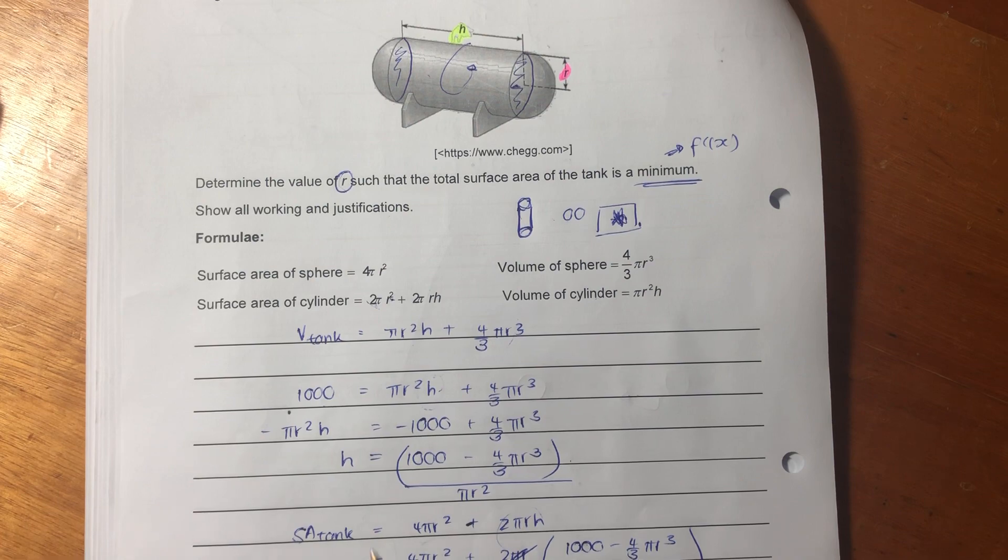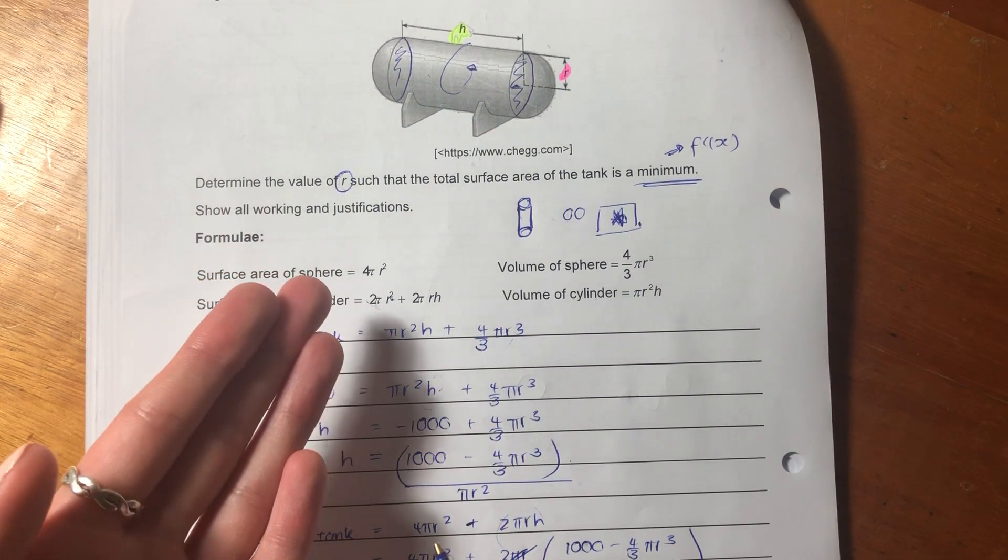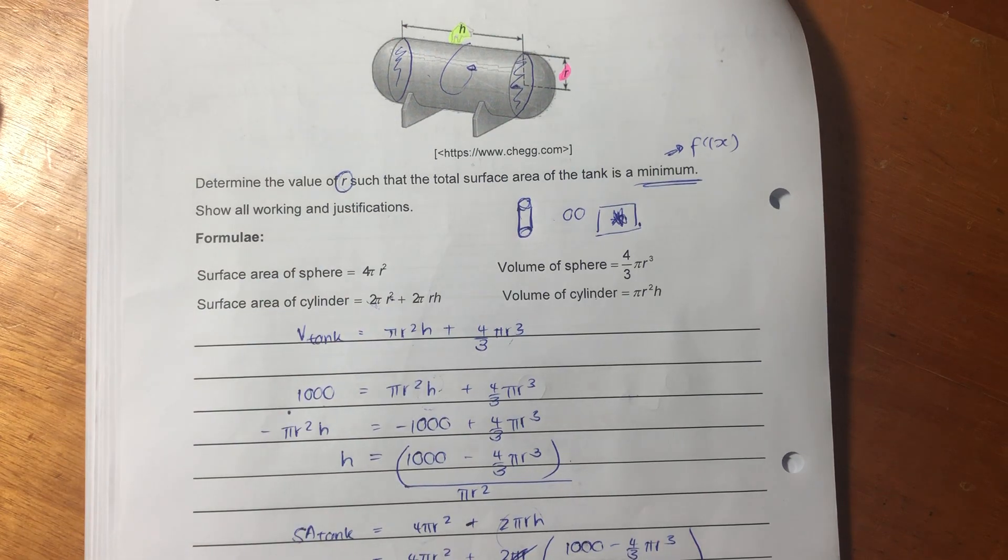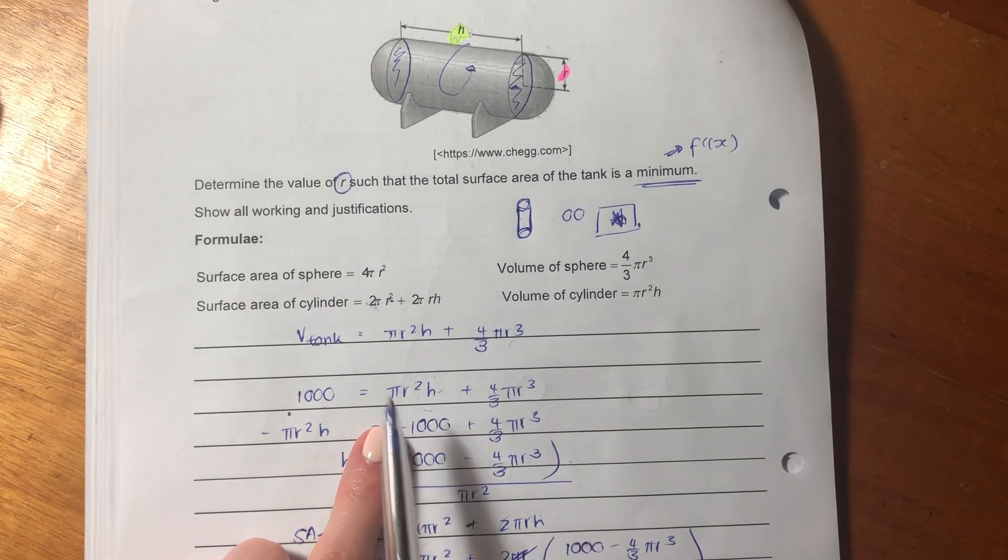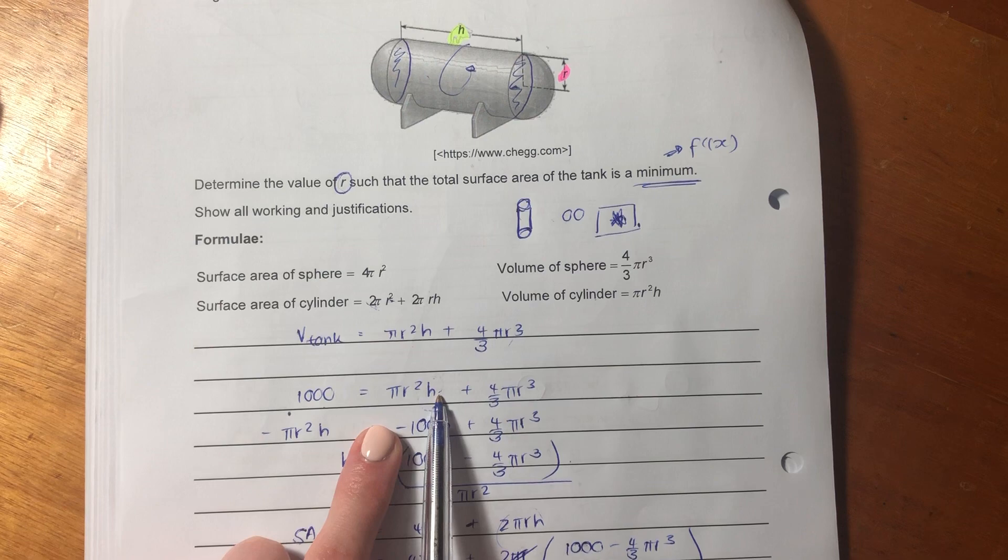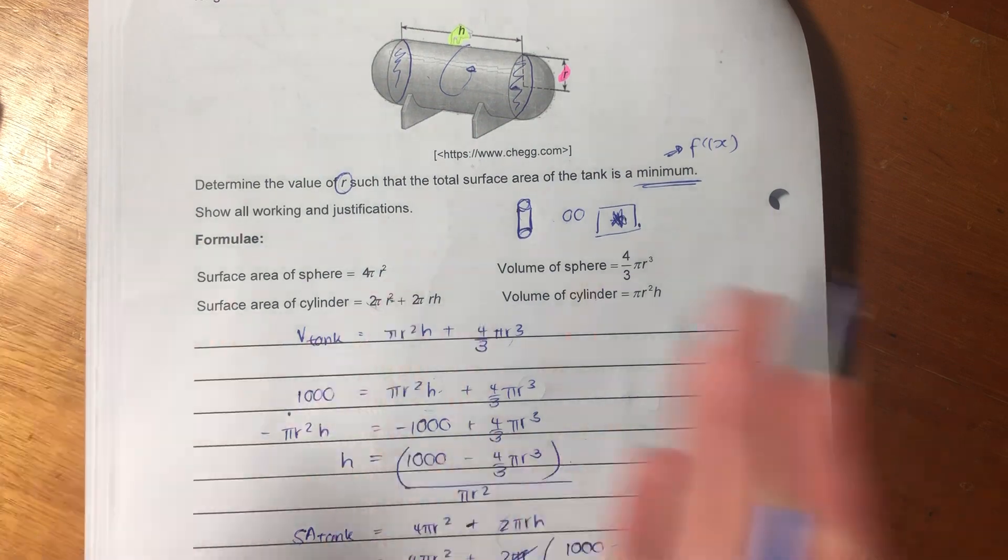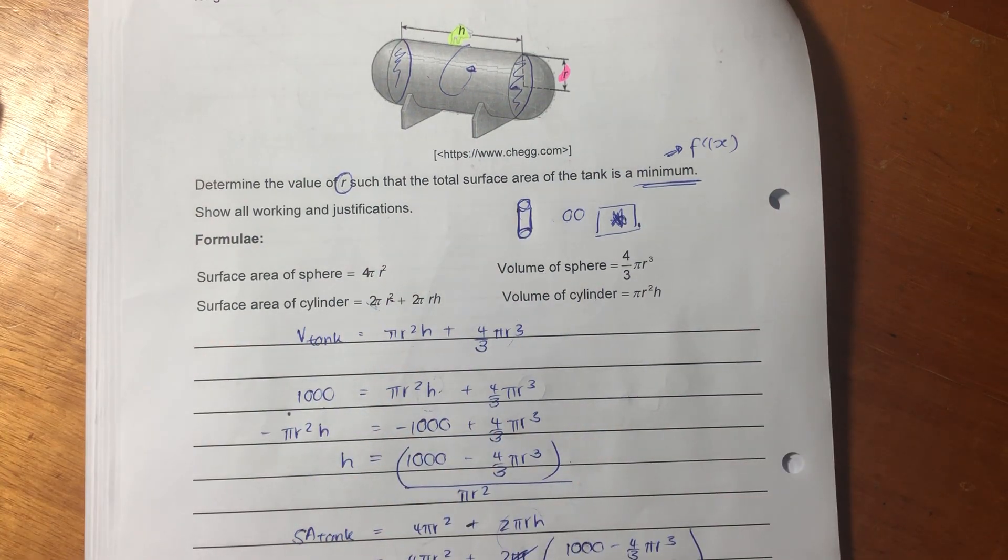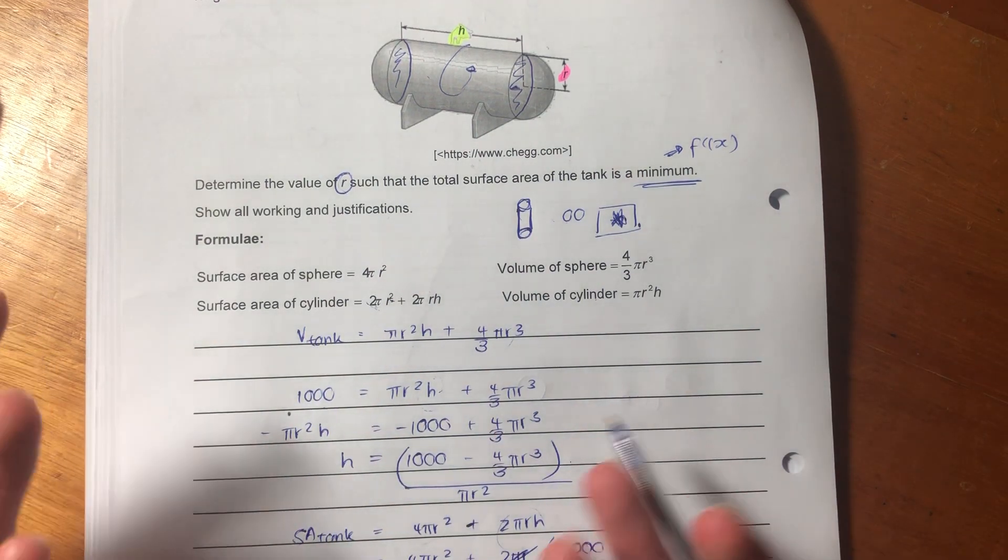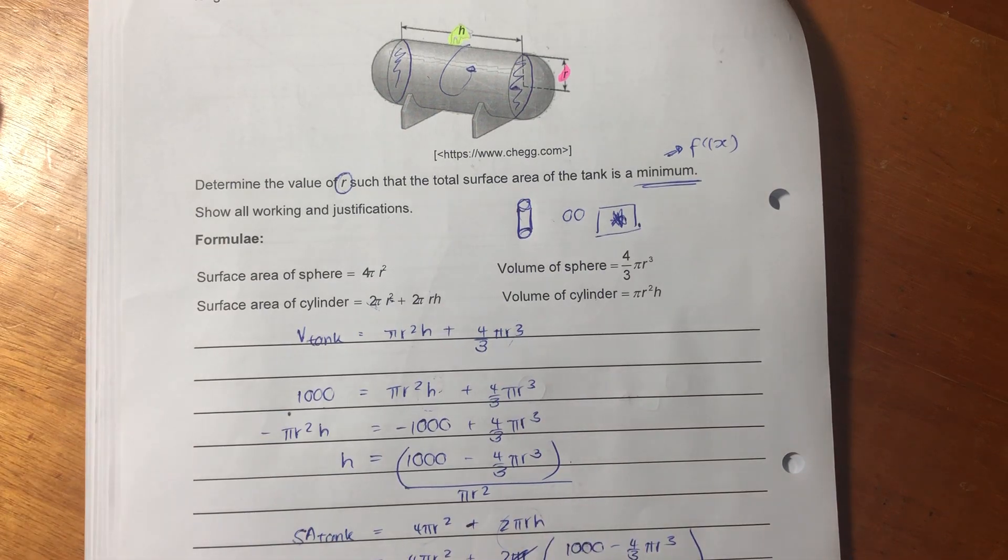Now, you could be saying, well, why did you do that? Well, what we have here is they've asked us to find the value of the radius. But now, we actually technically have two unknowns in this equation. It's the radius, and it's the height. If we can get the height in terms of the radius, then we only have one unknown, and that will be the radius in that instance. And that's why I've done that, because we don't want two unknowns, because it will make it difficult to complete what they've asked us to do.